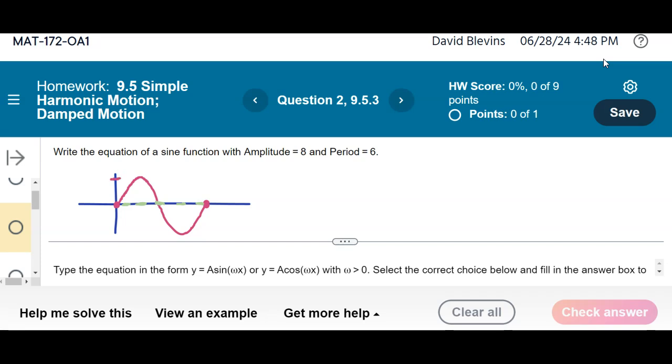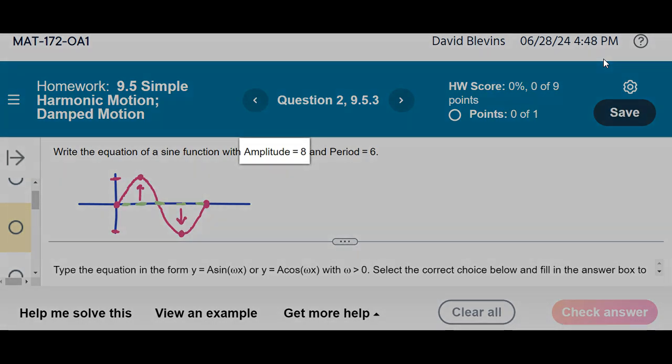The height that it gets to at a quarter of a period and three-quarters of a period is the amplitude up off the midline and down off the midline. So it goes up to the highest point, down to the lowest point. That would be 8 in this case, so positive 8 and negative 8.